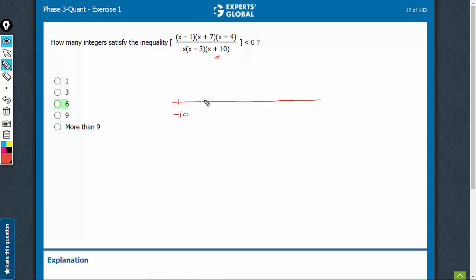Then minus 7 for x plus 7, then minus 4 for x plus 4, then 0 for x itself, then 1 for x minus 1, and then 3 for x minus 3.